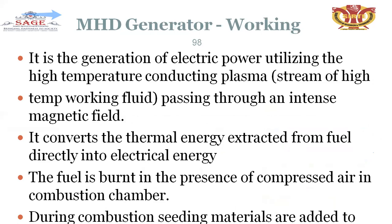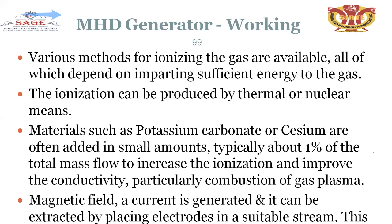The MHD generator works by generating electrical power utilizing high-temperature conducting plasma. A stream of high-temperature working fluid passes through an intense magnetic field, converting thermal energy directly into electrical energy. Fuel is burned in the combustion chamber in the presence of a compressor. During combustion, seeding materials are added; various methods for ionizing the gas depend on imparting sufficient energy. Ionization can be produced by thermal or nuclear means. Materials such as potassium carbonate or cesium are added in small amounts (typically about 1% of total mass flow) to increase ionization and improve conductivity of the plasma.